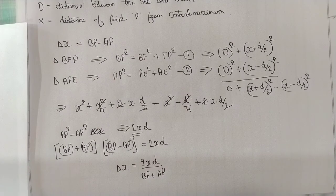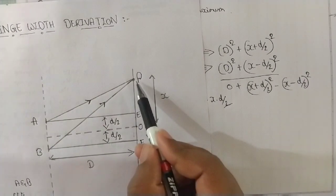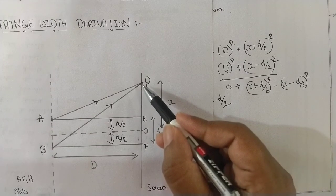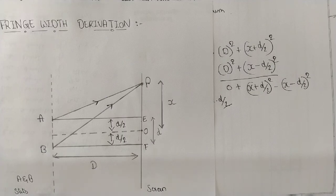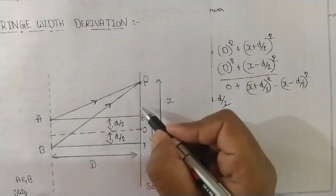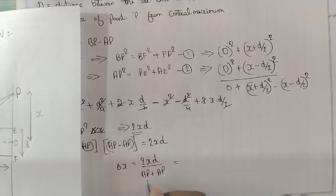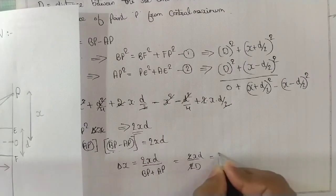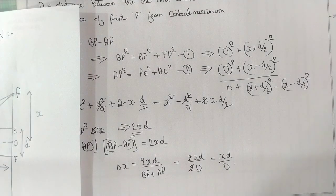Now from the diagram, we make one good assumption: since point P is very close to O, we can neglect the small difference. So we take AP ≈ D and BP ≈ D. Therefore BP + AP = 2D, and the 2 in the numerator and 2 in the denominator cancel. So delta X = XD/D — the path difference at point P equals X times small d divided by capital D.